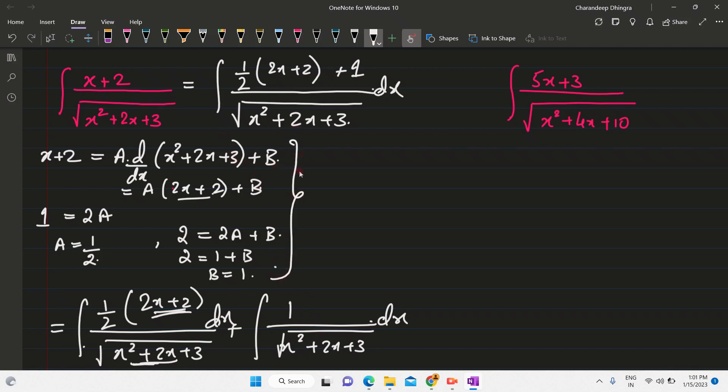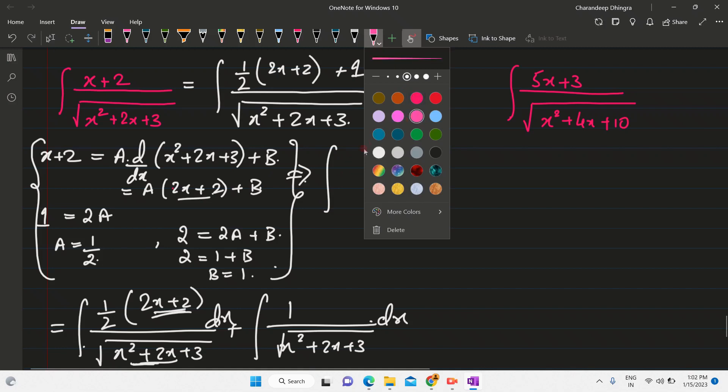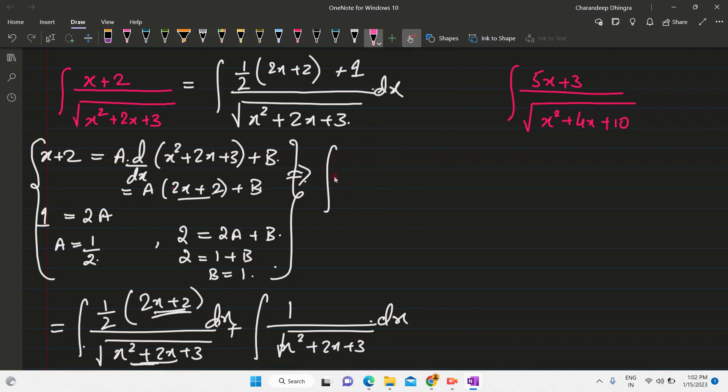let's say if you have this question in a competitive exam and you want to solve it directly. So what you can do is you can skip this entire thing. And what you can do is you can just go ahead and try this method wherein, so I'll just do this in pink color. So let's say in the numerator, in the denominator, you have x squared plus 2x plus 3.